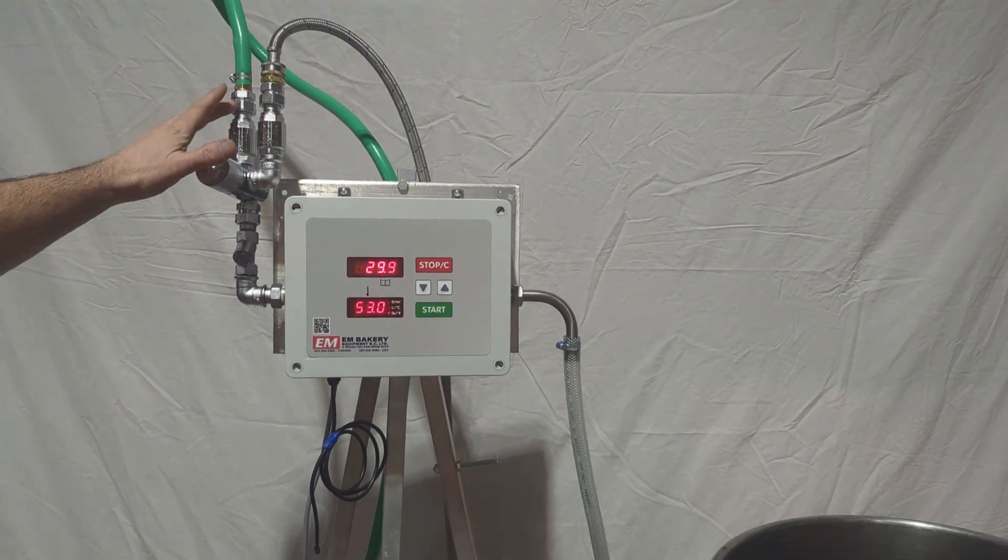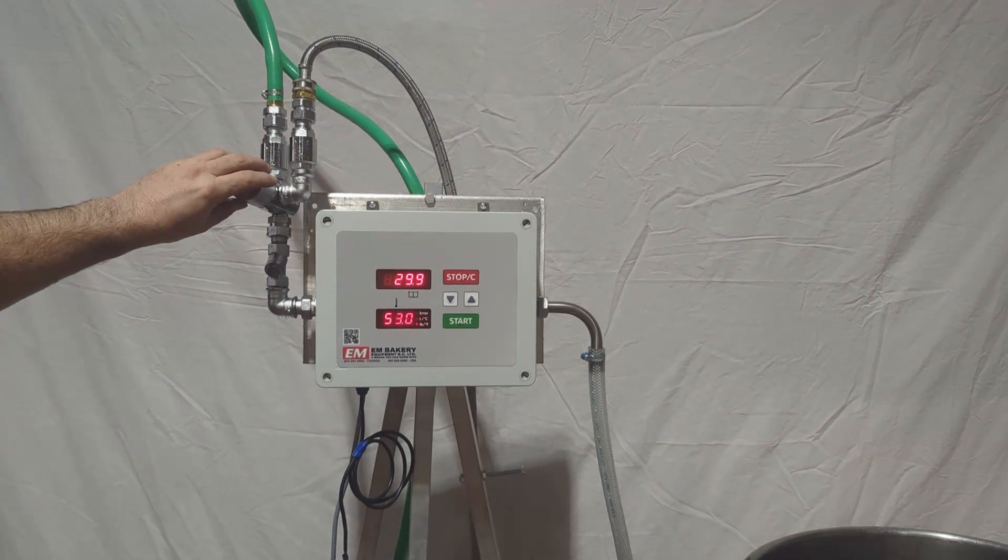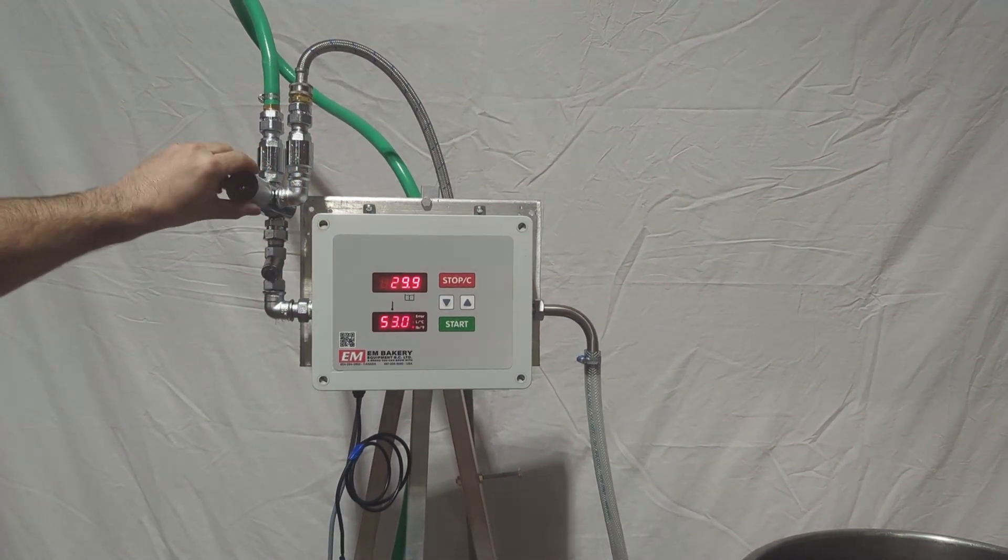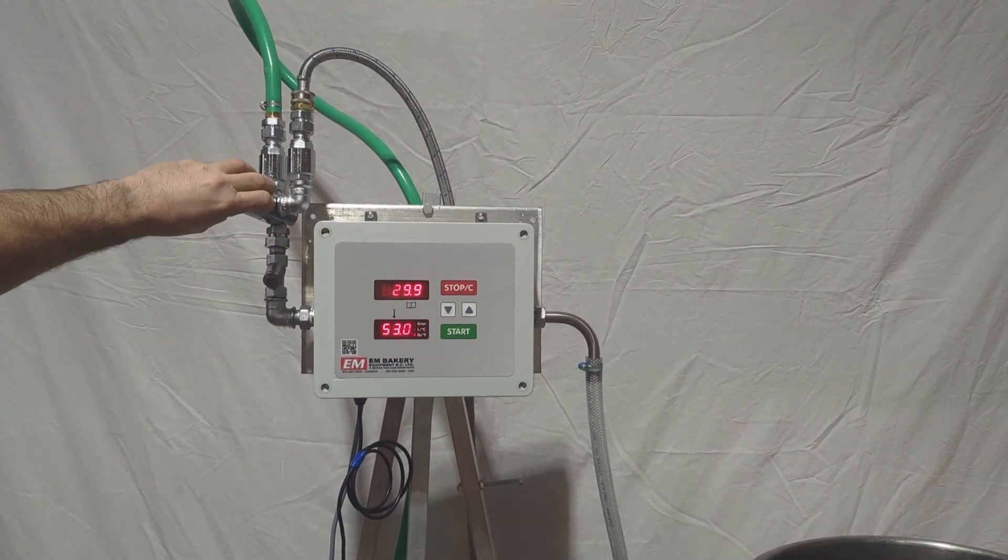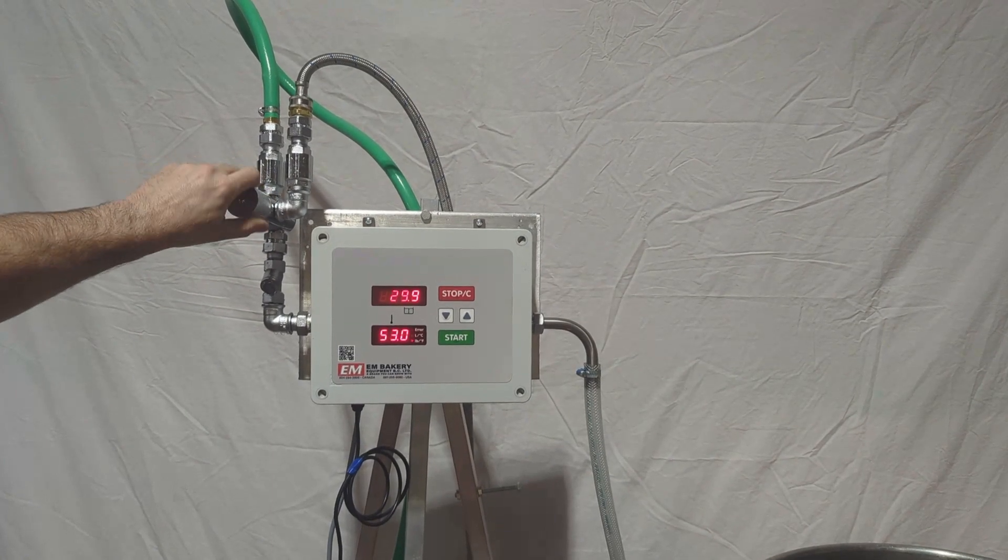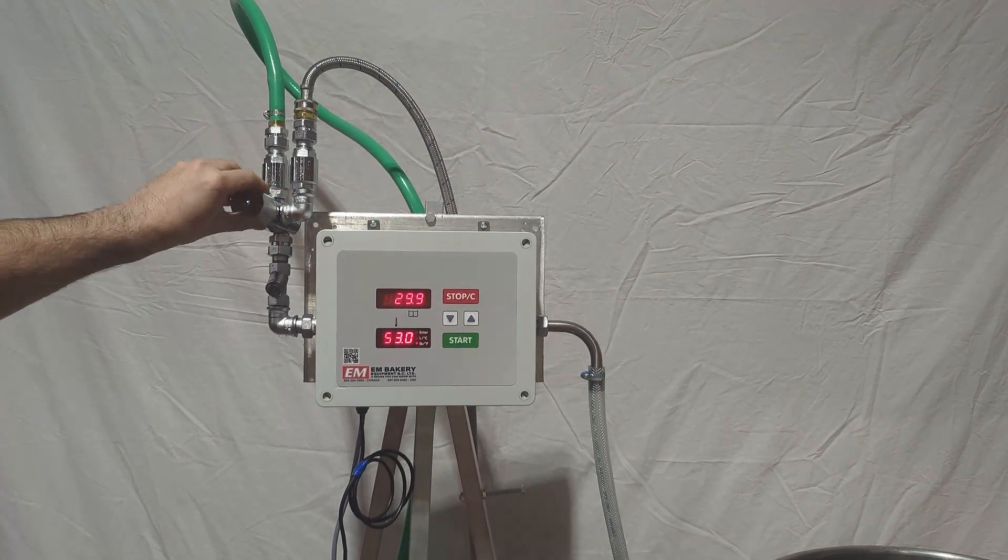Our mixing valve is here. We have hot and cold and how we choose our temperature is by blending between hot and cold. Favor all the way hot or all the way cold or in between.